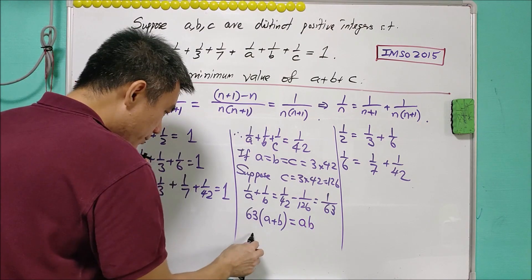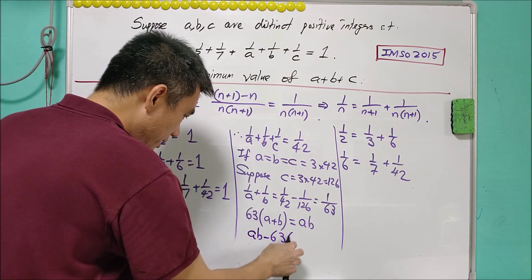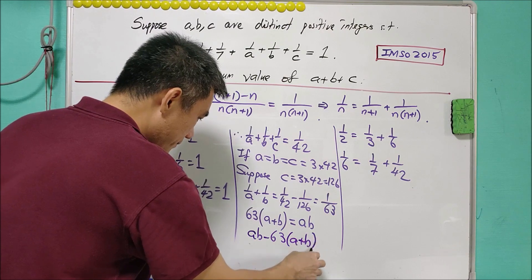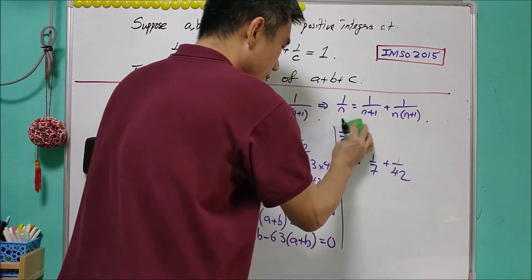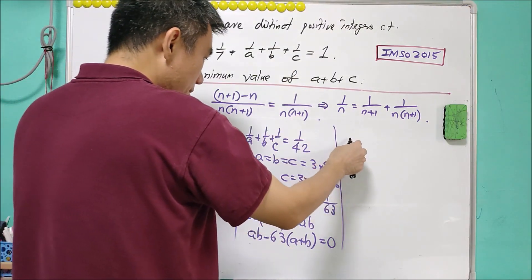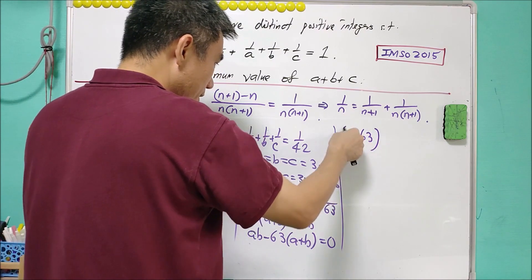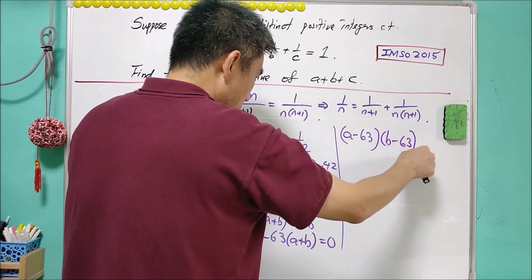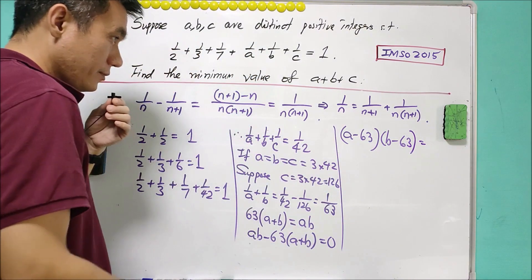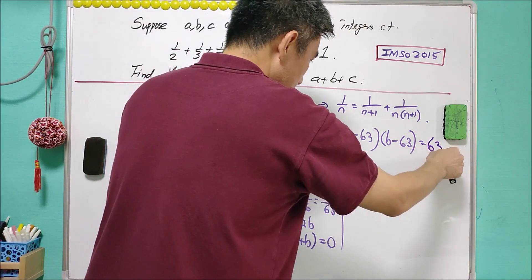So this will mean that AB minus 63A minus 63B equals to 0. So this can be factorized as A minus 63 times B minus 63 equals to 63 squared.